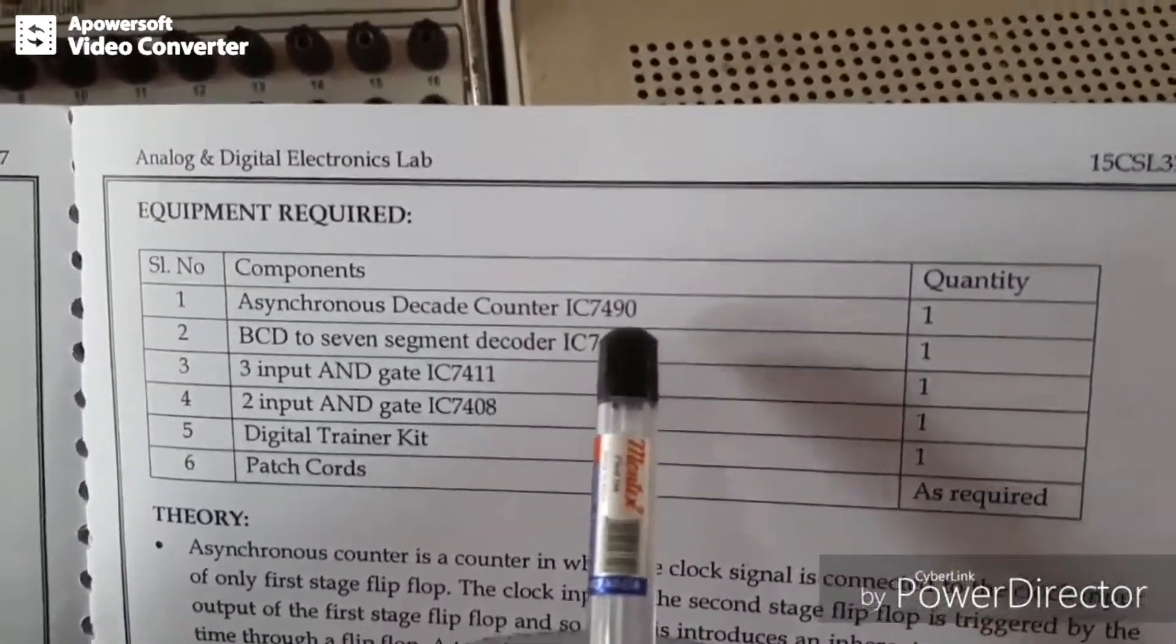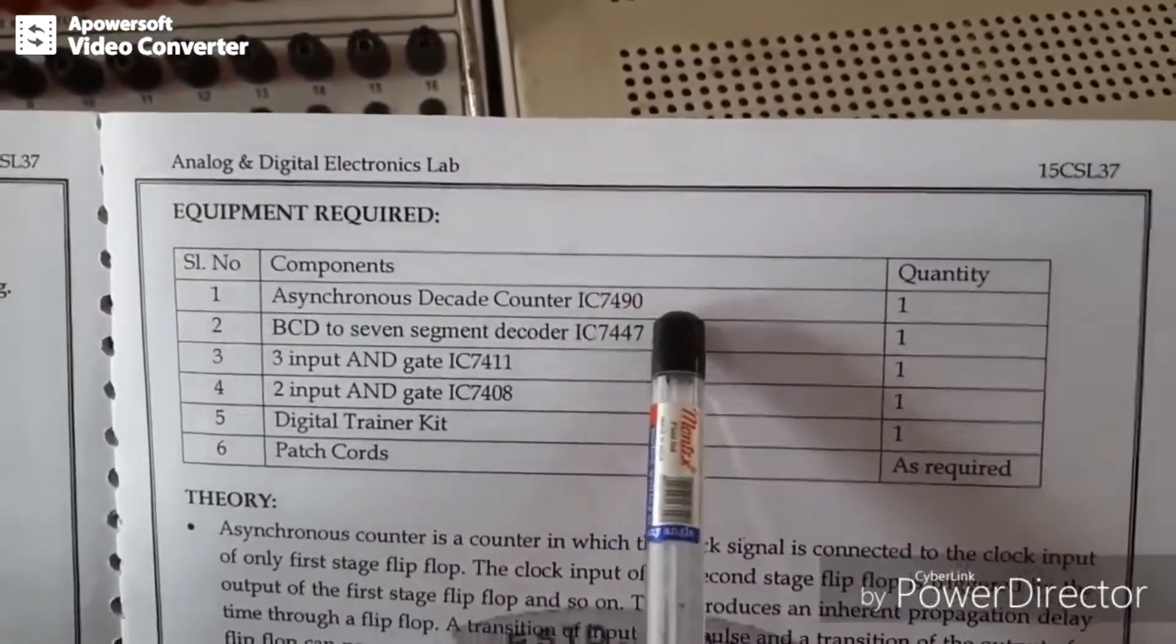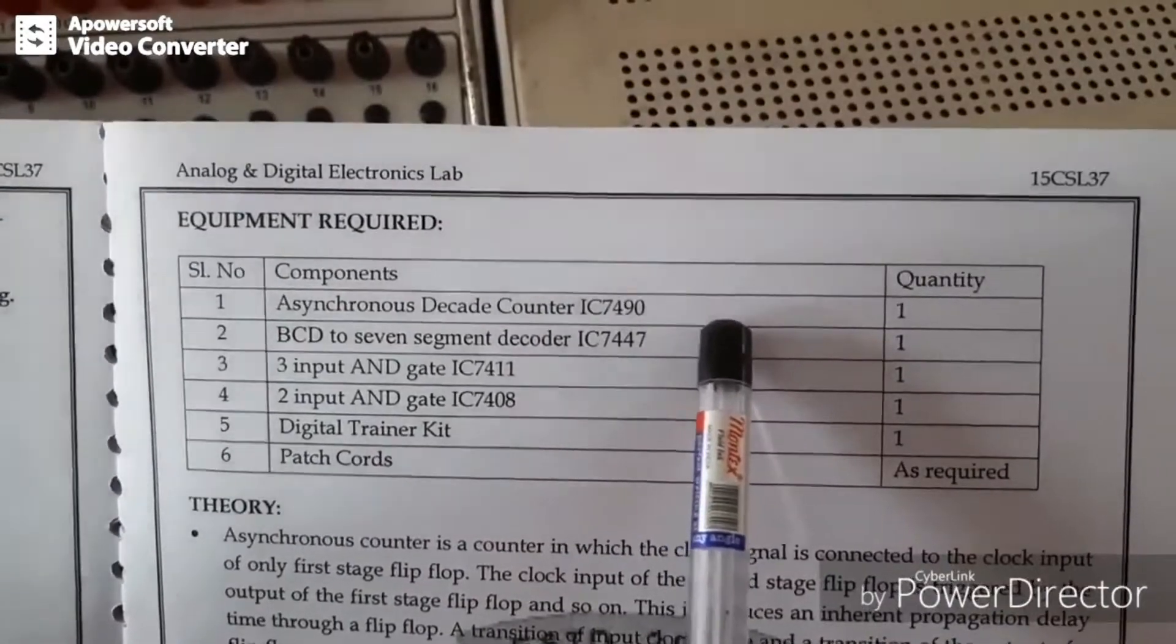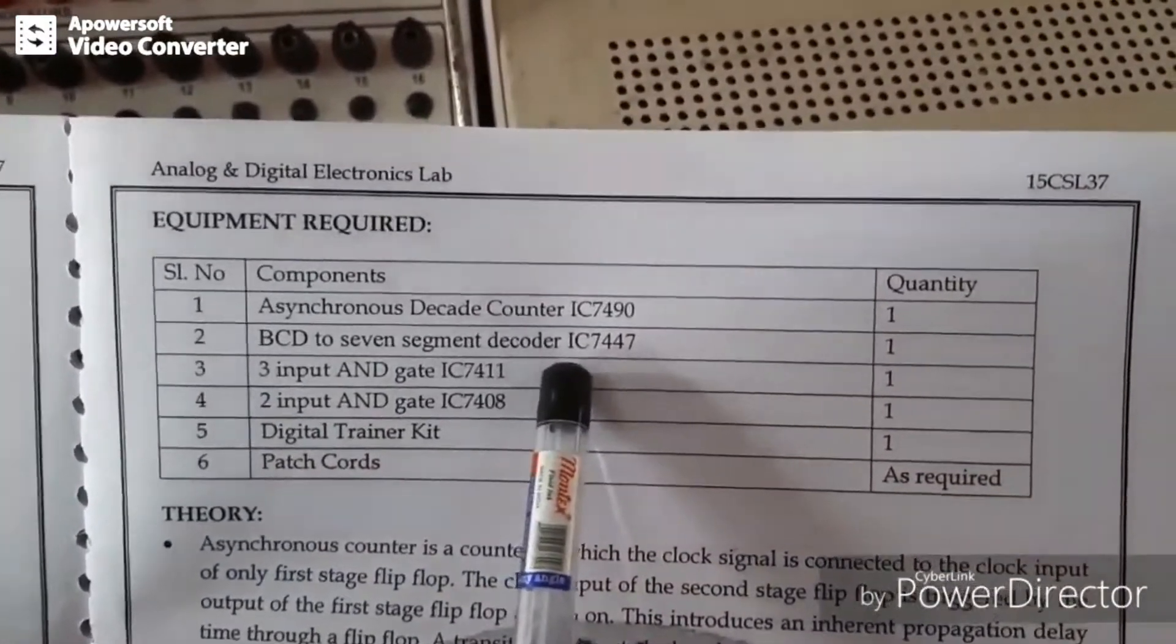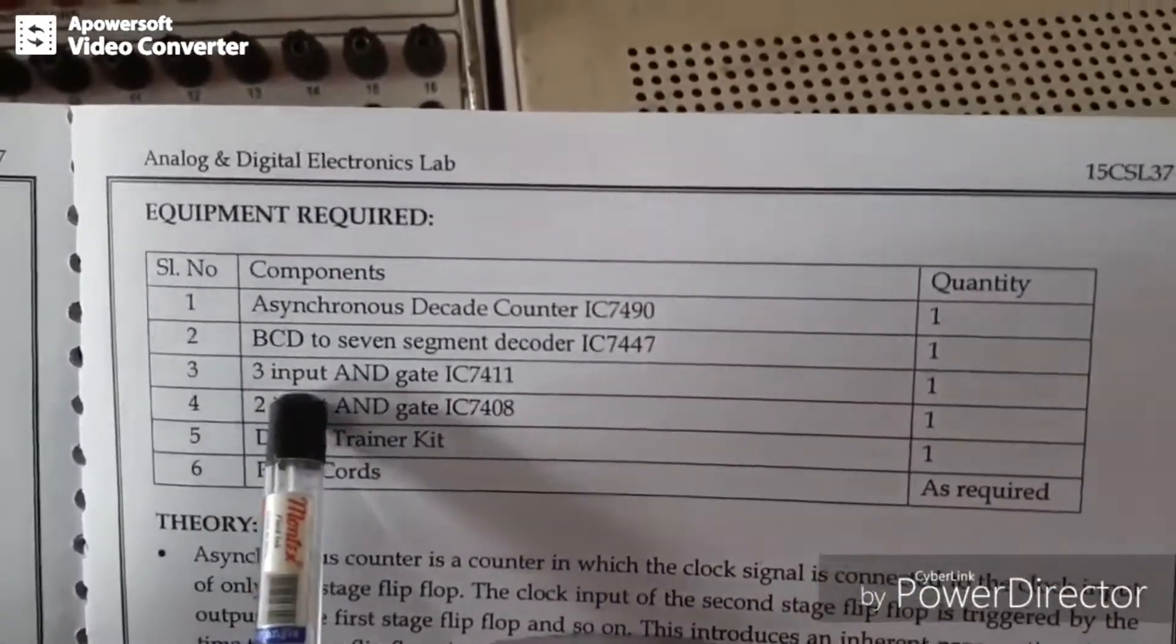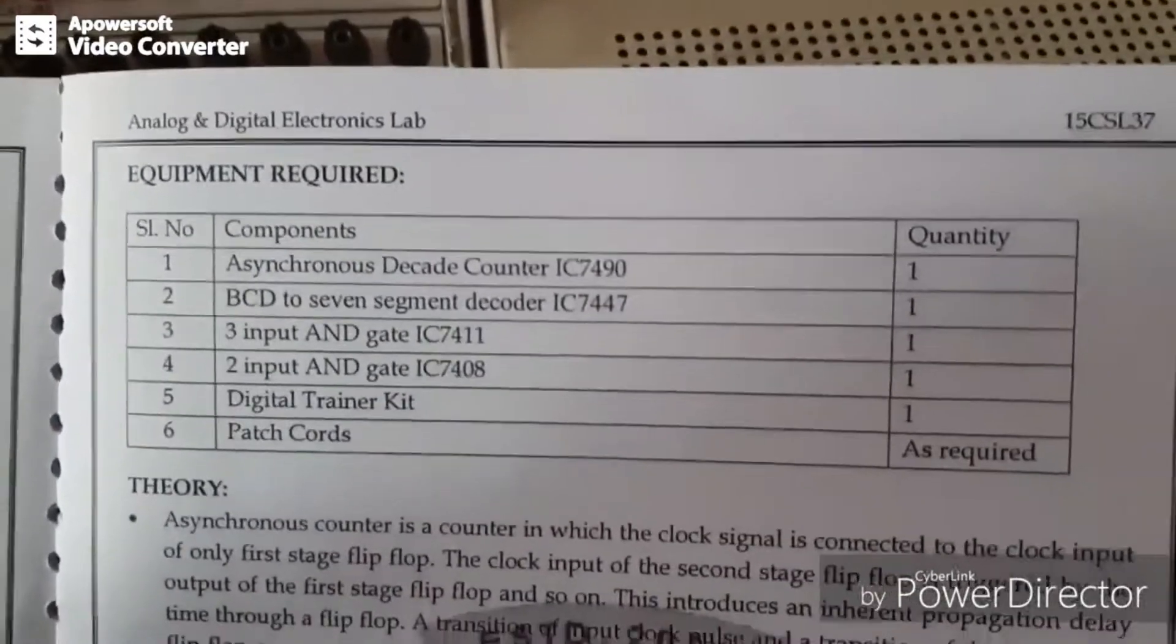Decade counter means a counter which counts 0 to 9, that is mod 10. 0 to 9 including 0 means 10 states are there. Then we have BCD to 7-segment decoder IC 7447, and 3-input AND gate and 2-input AND gate. So here various circuit implementations are there.